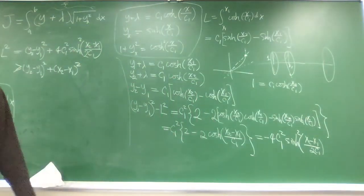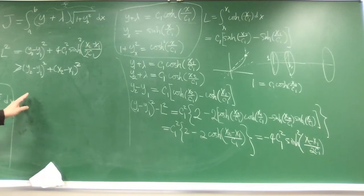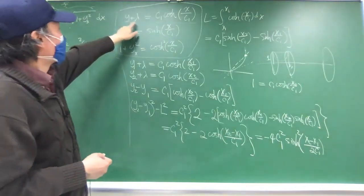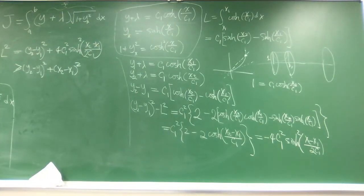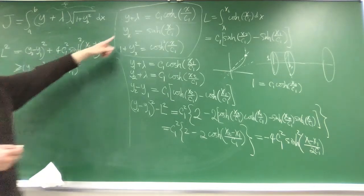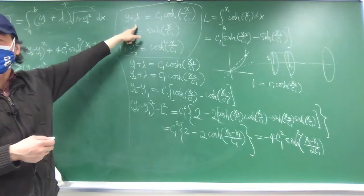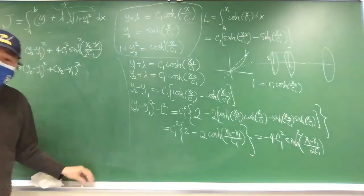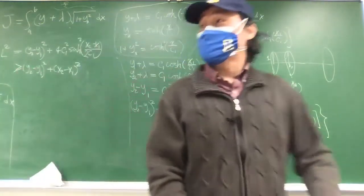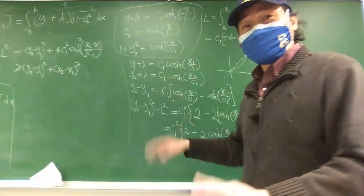The shape y of the catenary is a cosh function up to a vertical displacement — that's the catenary curve.